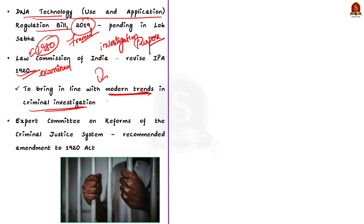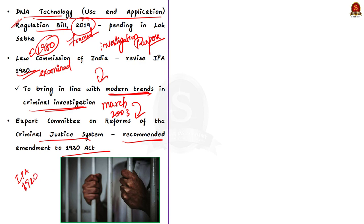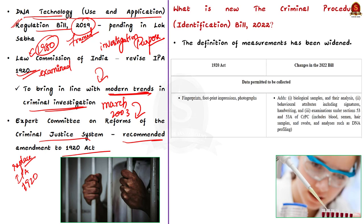In March 2003, the Expert Committee on Reforms of the Criminal Justice System recommended amending the 1920 Act to empower the magistrate to authorize the collection of data such as blood samples for DNA, hair, saliva and semen. To consider all these recommendations, the Criminal Procedure Identification Bill 2022 was introduced in Lok Sabha, seeking to replace the Identification of Prisoners Act 1920. Let us see what is new in this act.